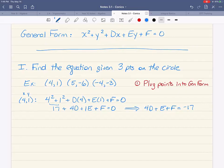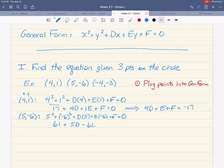Do the same thing with the other two points. The second point is five comma negative six. So we're going to have five squared plus negative six squared, make sure you put it in a bracket, d times five, e times negative six plus f equals zero. Five squared plus negative six squared you can put into your calculator. That is sixty-one plus five d minus six e plus f equals zero. Rearrange this one. You get five d minus six e plus f equals negative sixty-one.